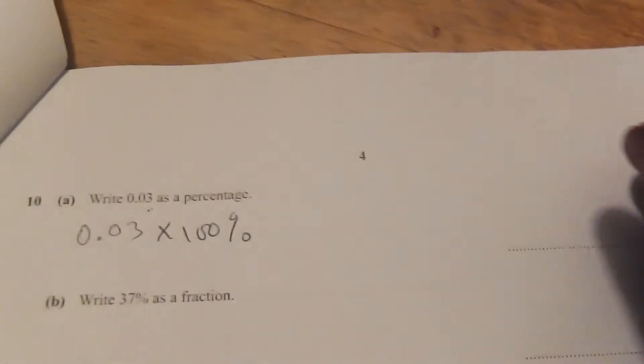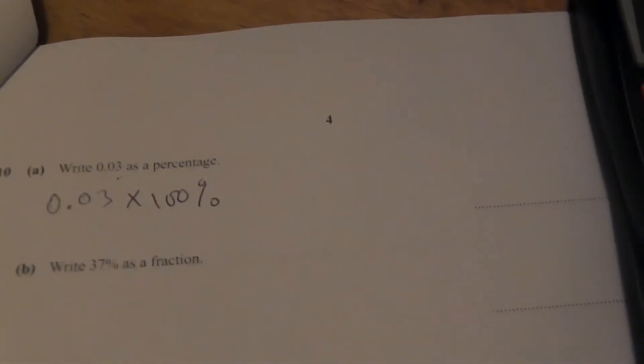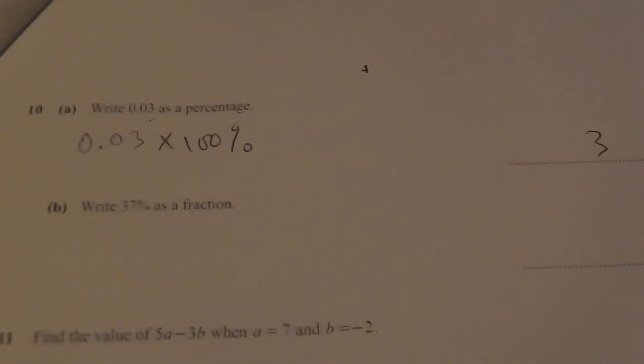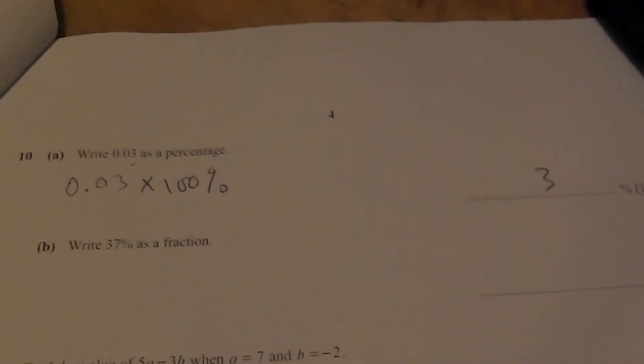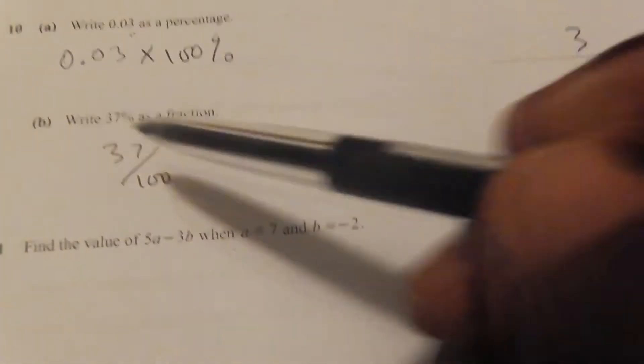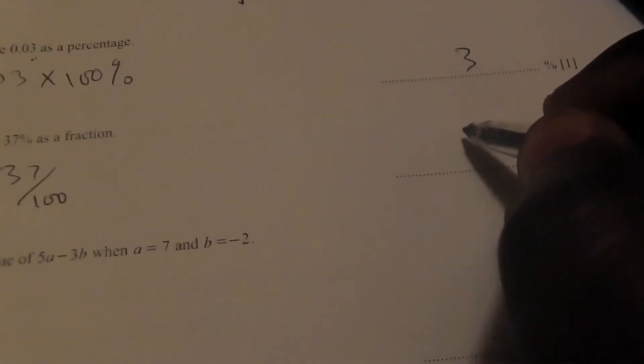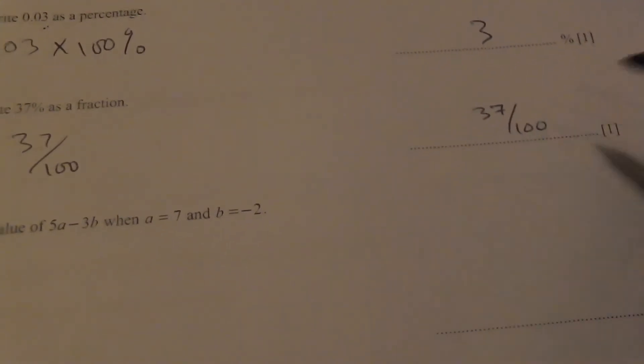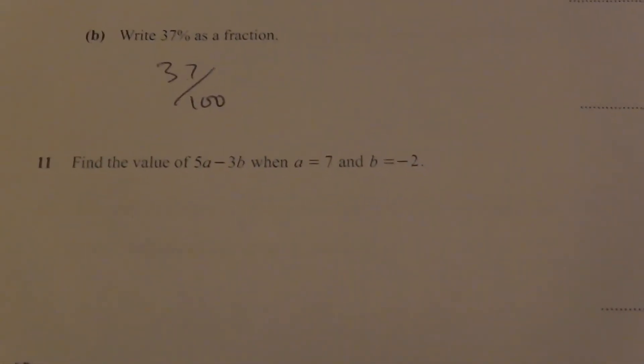The next part asks: write 0.03 as a percentage. To convert a decimal into a percentage, multiply by 100: 0.03 times 100 equals 3 percent. Then: write 37% as a fraction. If it's a percentage it means it's out of 100, so you write 37 over 100. Since 37 is a prime number, there are no common factors, so the fraction stays as 37/100.